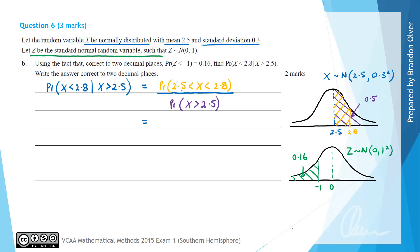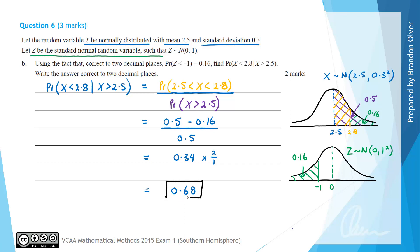The conditional probability equals the probability that X is between 2.5 and 2.8 divided by the probability that X is greater than 2.5. The probability that X is between 2.5 and 2.8 equals 0.5 minus 0.16, because the shaded region on the Z distribution equals the corresponding region on X. So we get (0.5 − 0.16) / 0.5 = 0.34 / 0.5 = 0.34 × 2 = 0.68, correct to two decimal places.